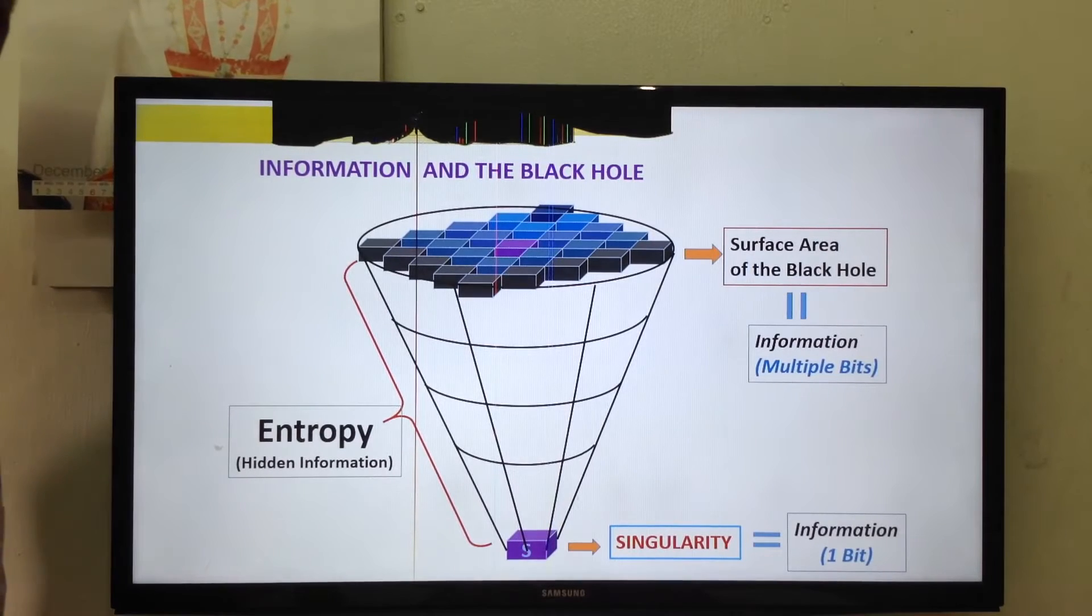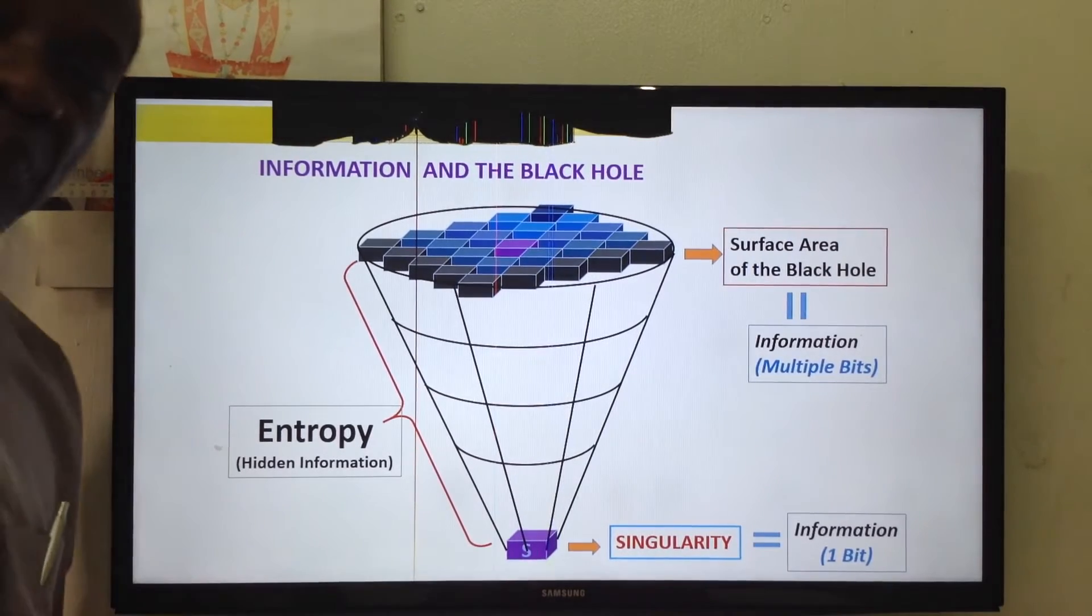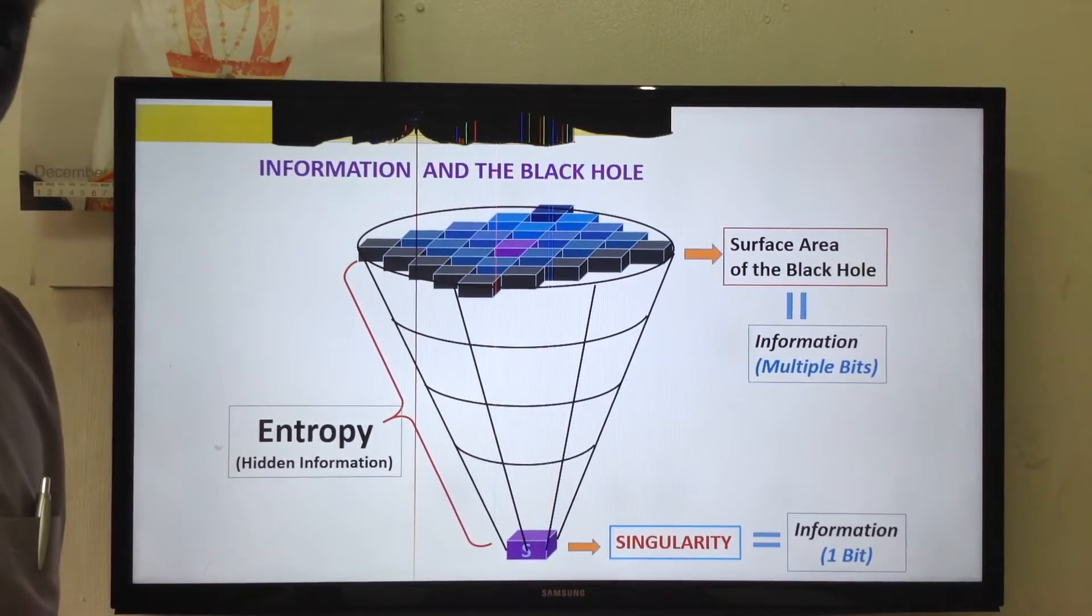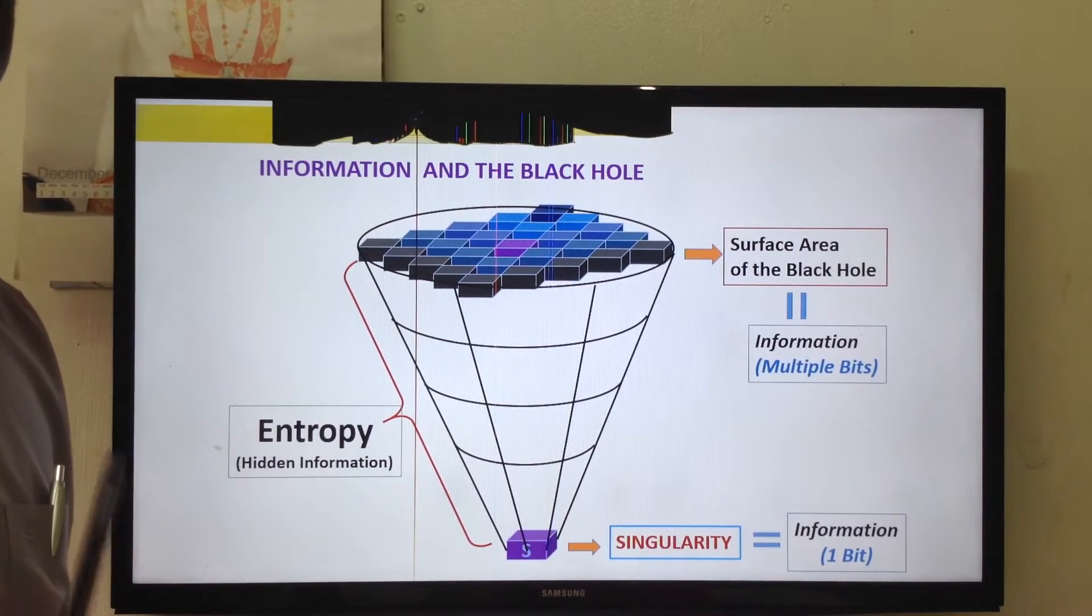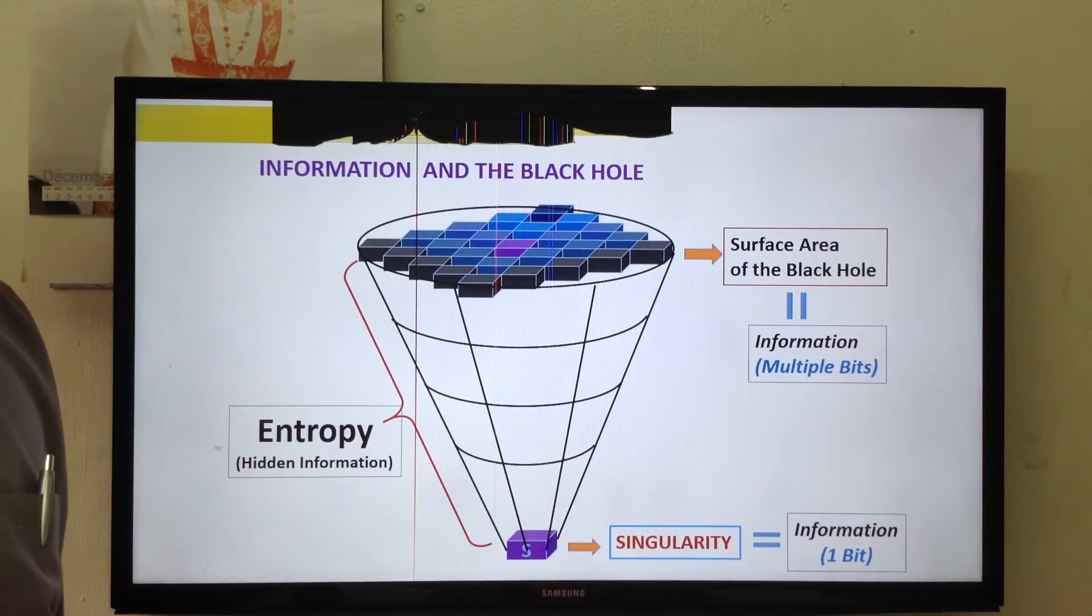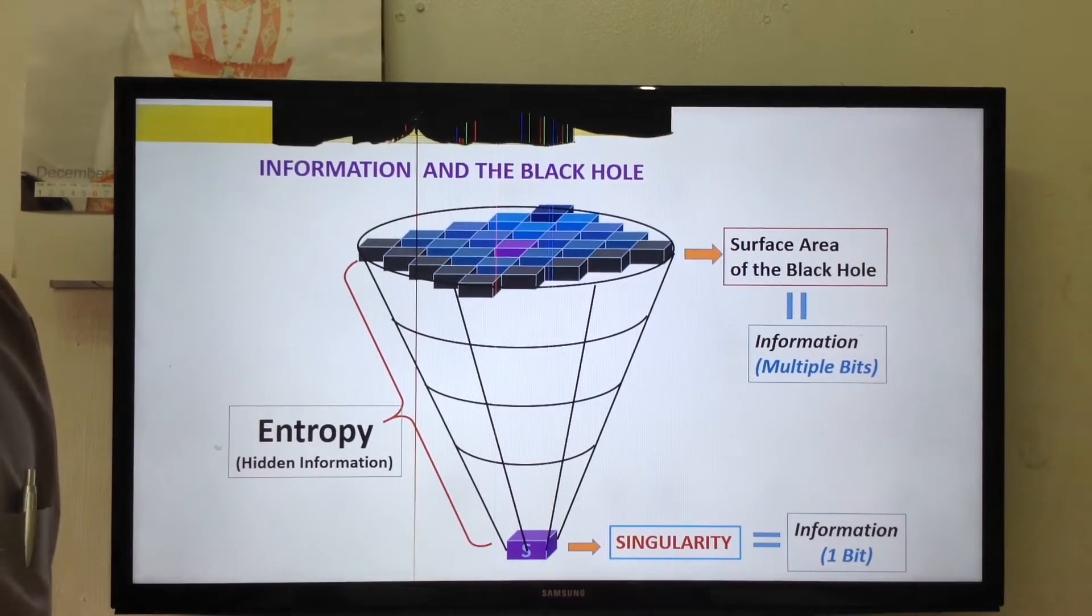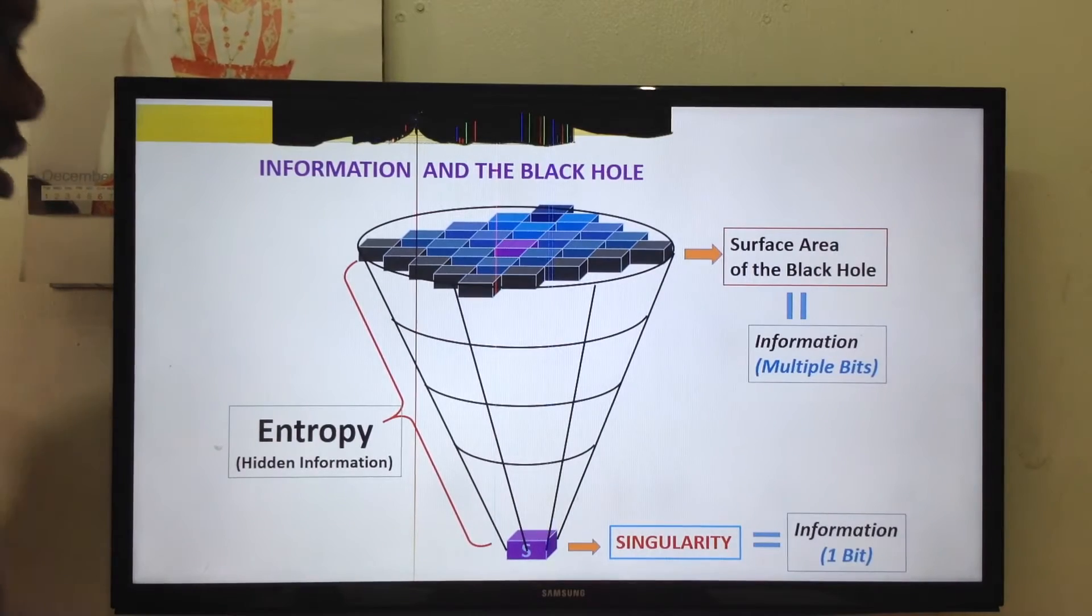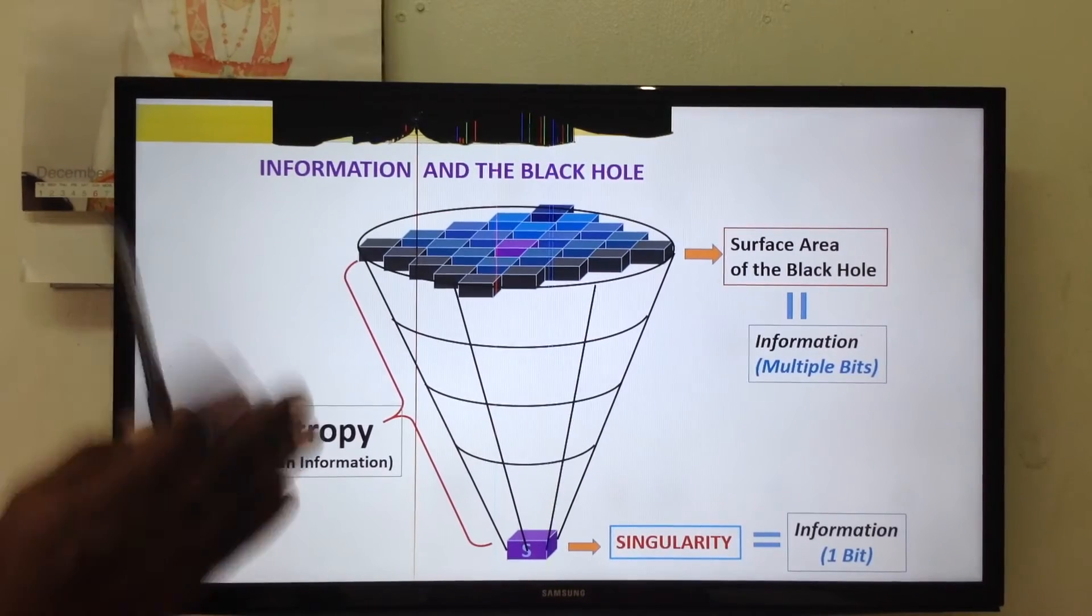And this is a very great development in science. Because information can never be lost. Information cannot be destroyed. Information, no matter what are the circumstances, will always remain. And where to find it? We have to go on the surface of the black hole. That's for objects.